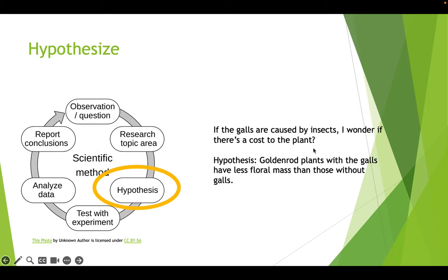That might lead you to having some questions you might want to test. Like, if these galls are caused by insects, I wonder if it hurts the plant at all — is there a cost to the plant to having a gall? So you might develop a hypothesis that goldenrod plants with the galls are able to produce less flowers or less floral mass than those without the galls. The whole point of a plant is to reproduce, so if the flower mass is affected, then that would be a real significant cost to the plant.